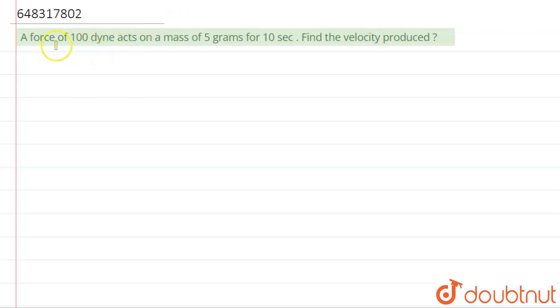Hello students, now we're going to see this question. The question says that a force of 100 dynes acts upon a mass of 5 grams for 10 seconds. Find the velocity produced.